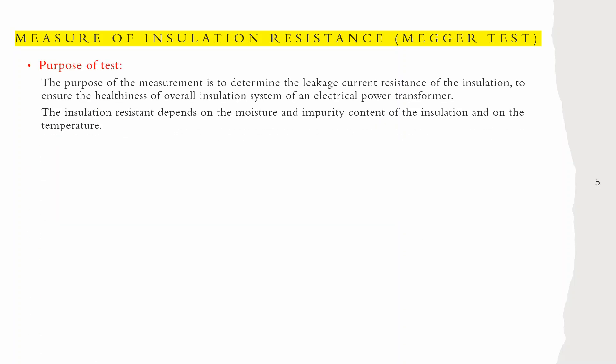Next is the measure of insulation resistance, the megger test. The purpose of this measurement is to determine the leakage current resistance of the insulation to ensure the healthiness of the overall insulation system of an electrical power transformer. The insulation resistance depends on the moisture content, impurity content of the insulation, and the temperature.